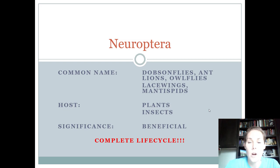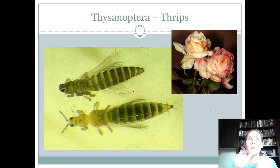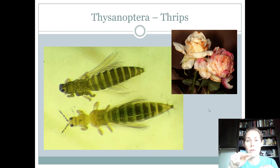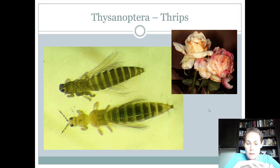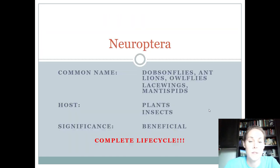The mouthparts for all Neuropterans are chewing, which is nice and consistent. Looking back at Thysanoptera, their mouthparts are actually called rasping — kind of like when scissors get misaligned and snap back. They rasp and tear at plant tissue and then feed on what oozes out.